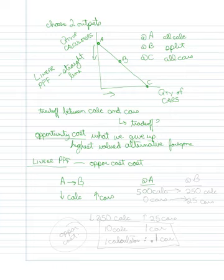Let's say that at A, I'm at 500 calculators and I'm obviously at zero cars. At B, I'm at 250 calculators, and let's say, let's just make the math relatively simple here, 25 cars. So I gave up 250 calculators to gain 25 cars.